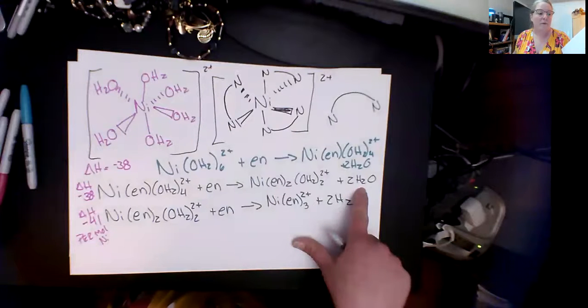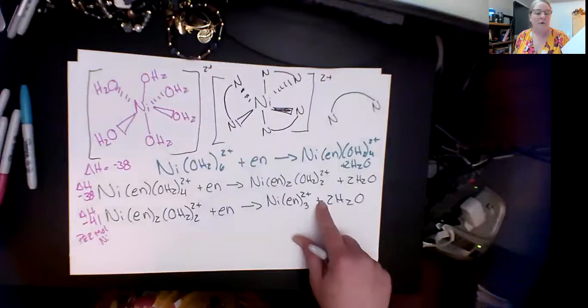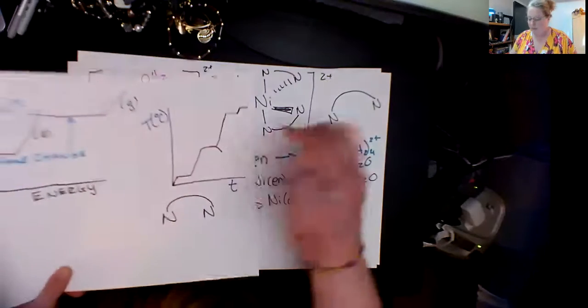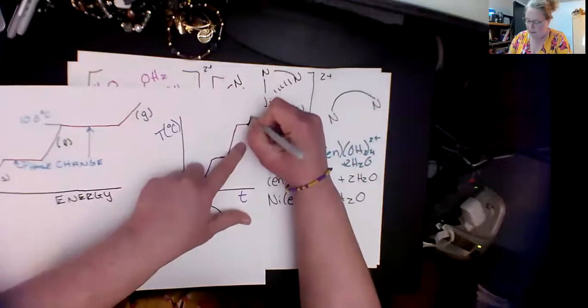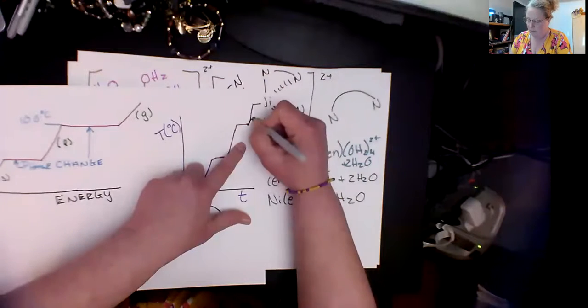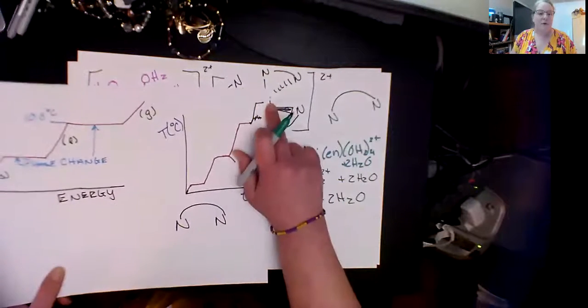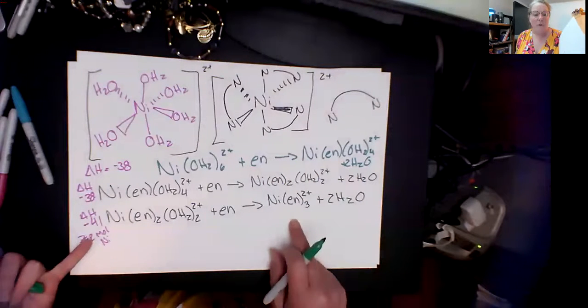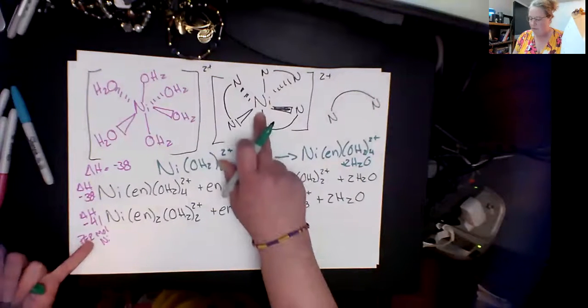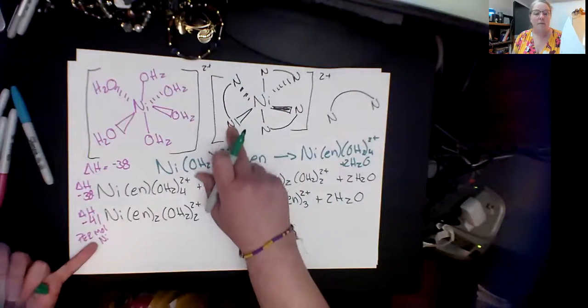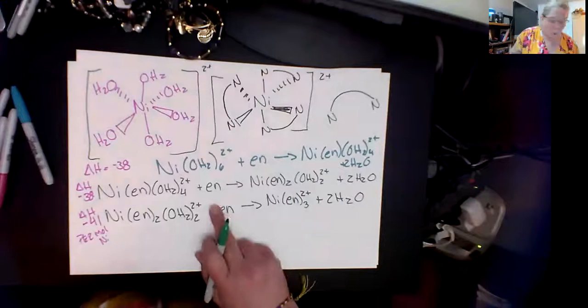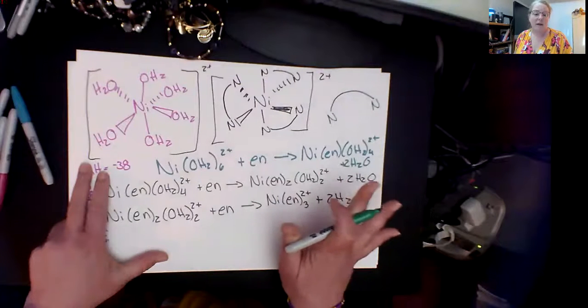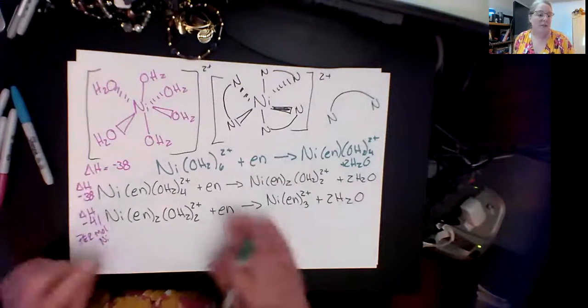When it plateaus that's when I now have another en added on and I've displaced another two waters. By the time I get down here and I've added the last en, I'd have this third edition. I can't do anymore because I've added in a mole equivalent. I've filled up all of my nickel centers with en. Once that is done this reaction is done. That means that no matter how much more I add I am not going to get an increase in temperature, the reaction is complete.